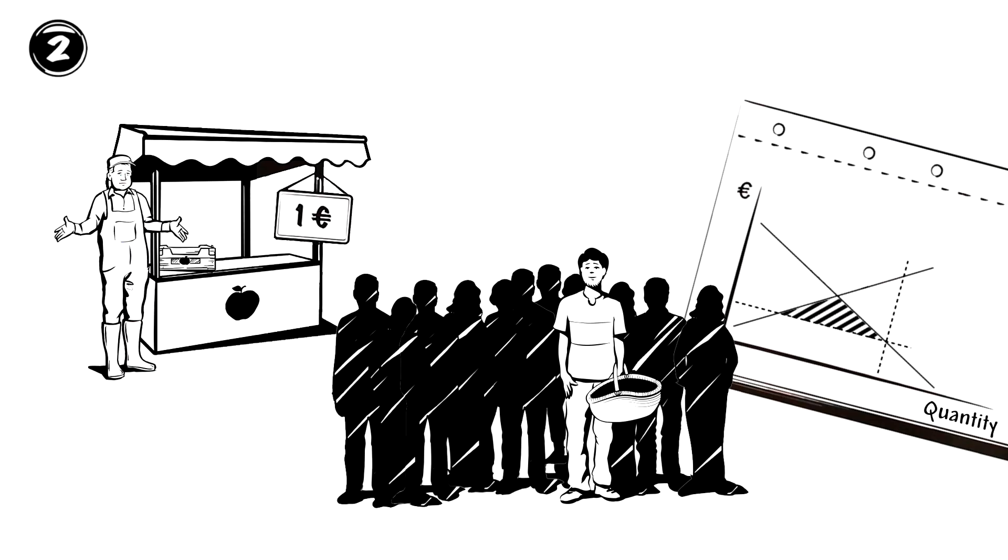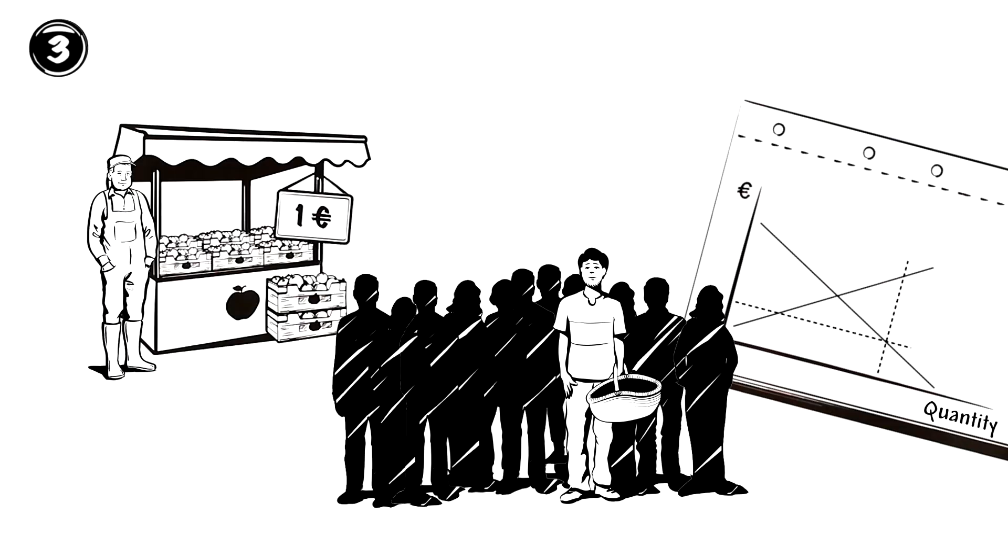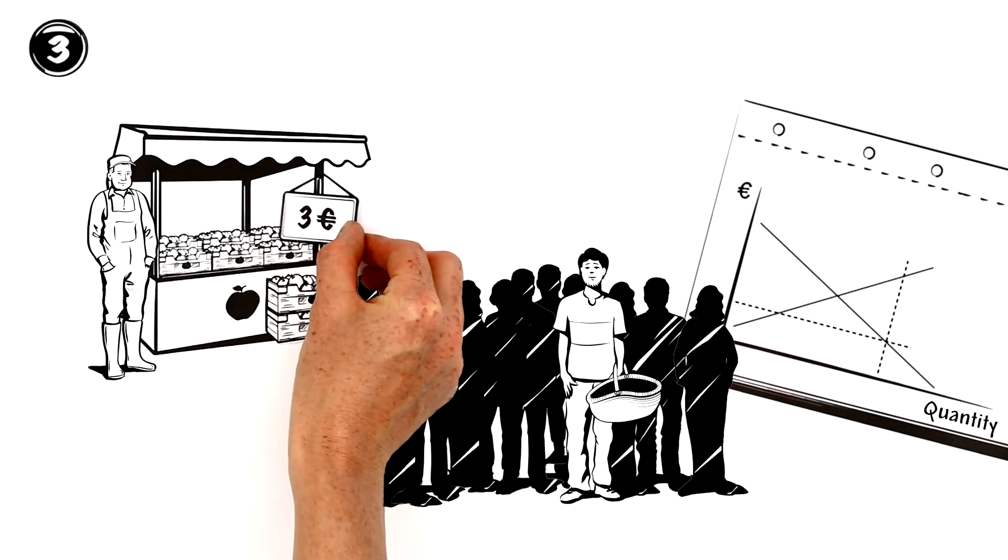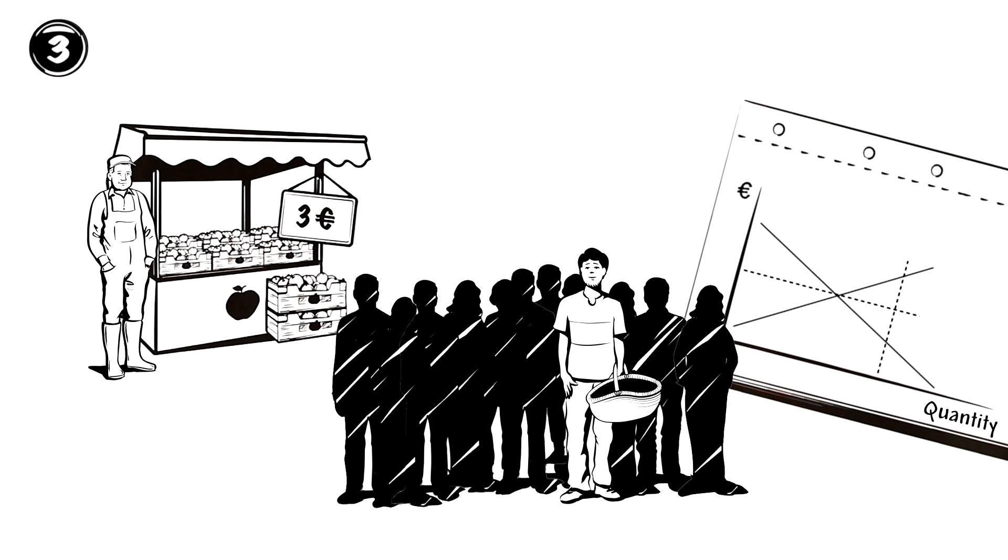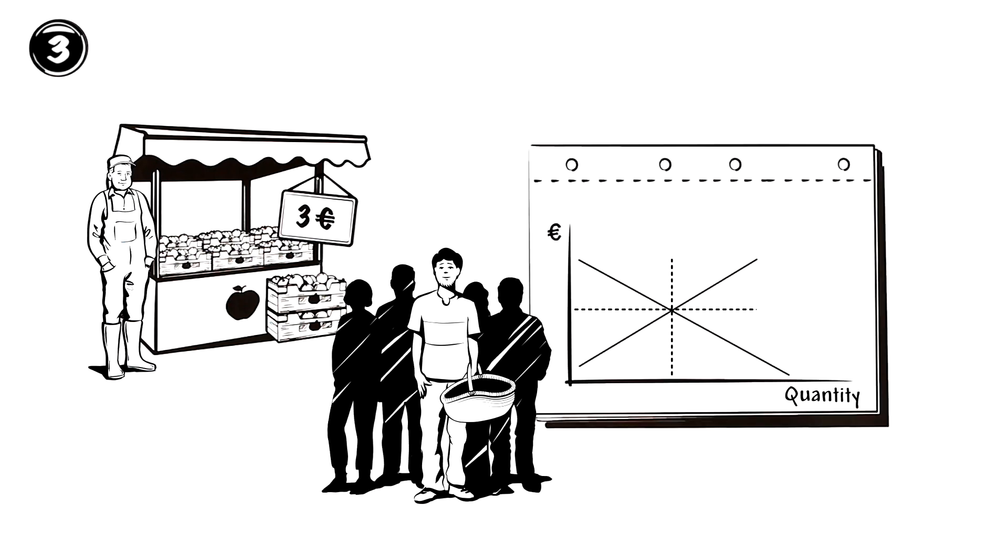This pushes the apple price up and phase 3 begins. Now the apples cost 3 euros. Supply and demand balance out. Once they match, the equilibrium price has been reached.